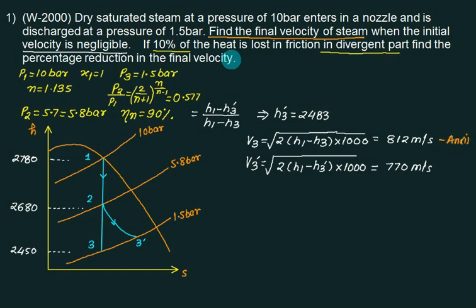Second one, you have to find out percent reduction in the final velocity. That equals to V3 dash minus V3 upon V3. Equals to 770 minus 812 upon 812 multiplied by 100. Answer is minus.